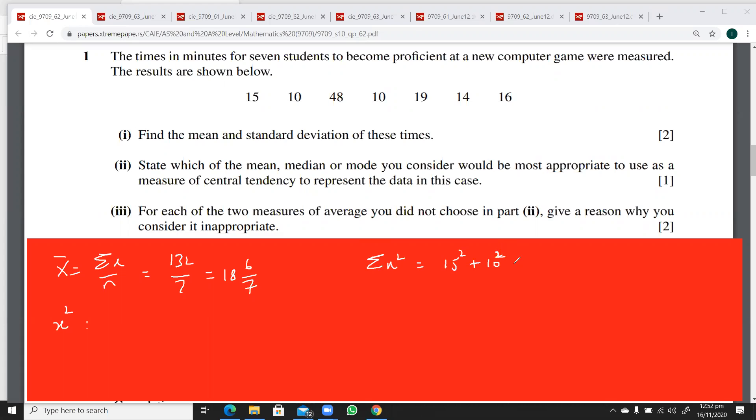Please someone do that quickly: 15 squared plus 10 squared plus 48 squared plus 48 squared plus 10 squared plus 19 squared plus 14 squared plus 16 squared. This gives us Σx squared.